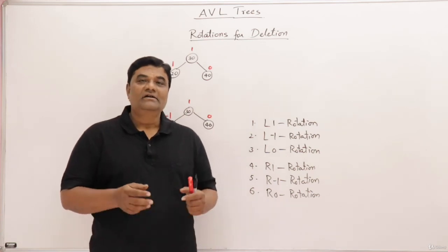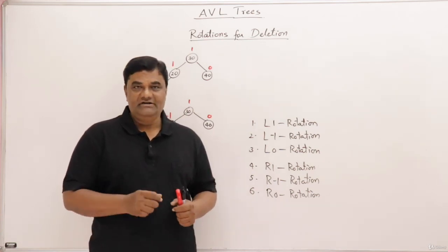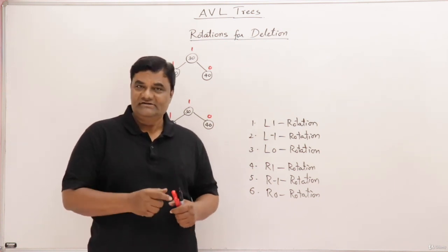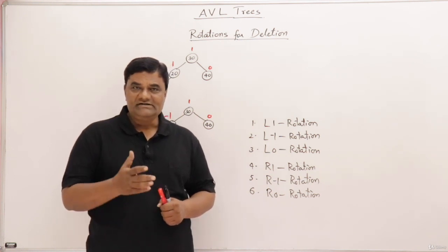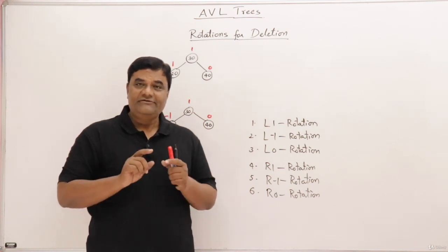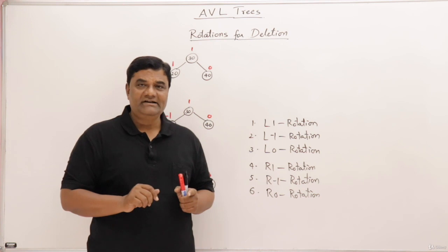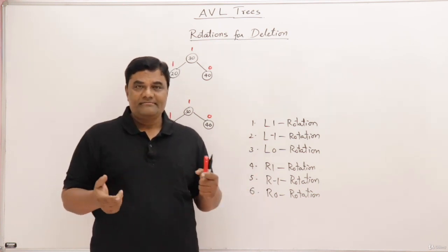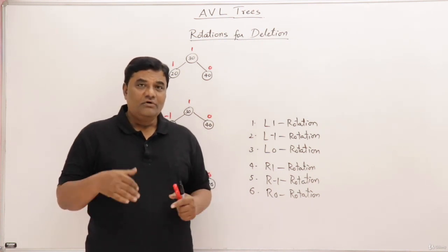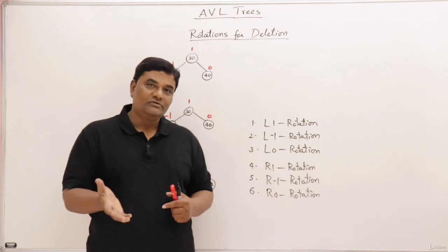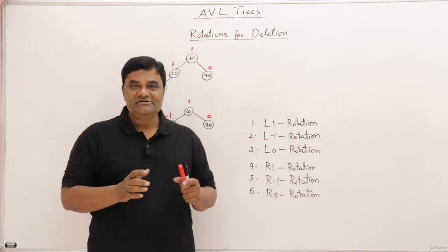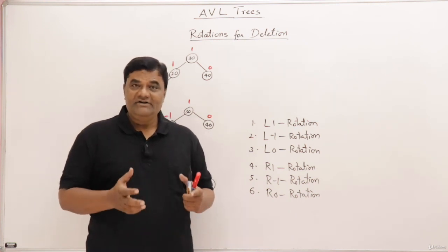The topic is deletion from AVL tree. Deletion from AVL tree is the same as deletion from binary search tree. The procedure is: first search for the key you want to delete; if found, delete it. Then its place will be taken by the in-order predecessor or in-order successor. You can go back to the deletion from binary search trees video to review that.